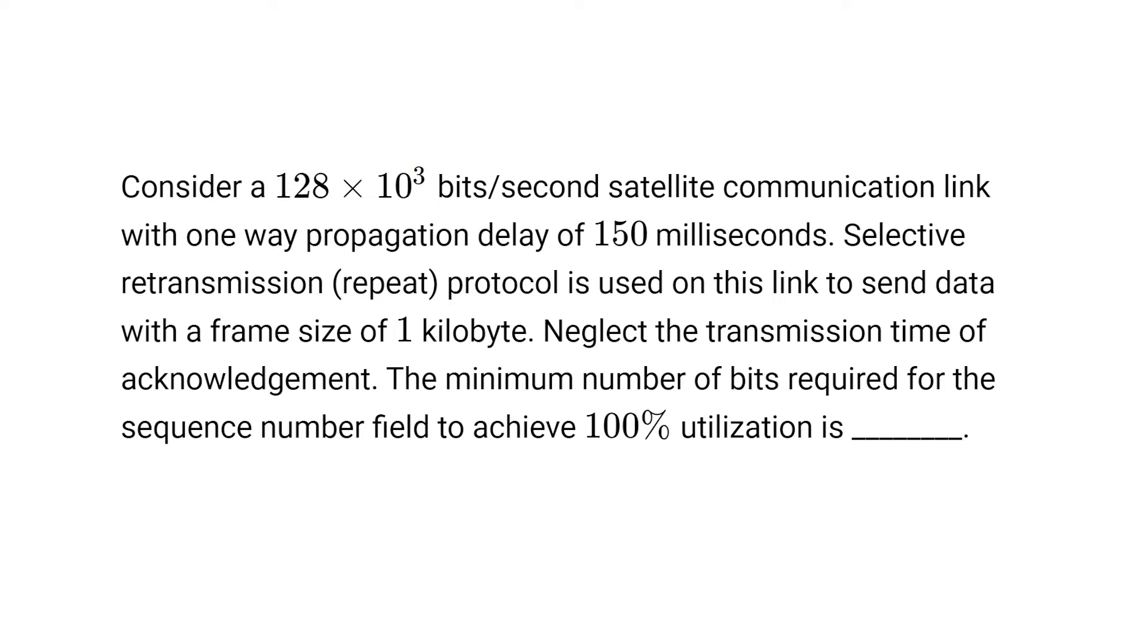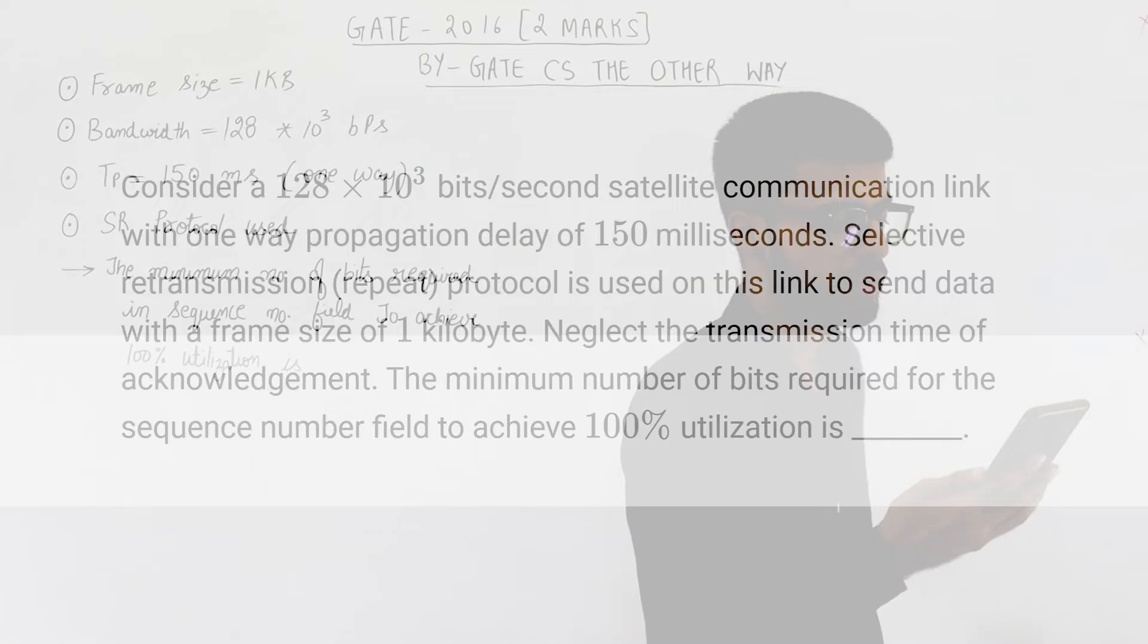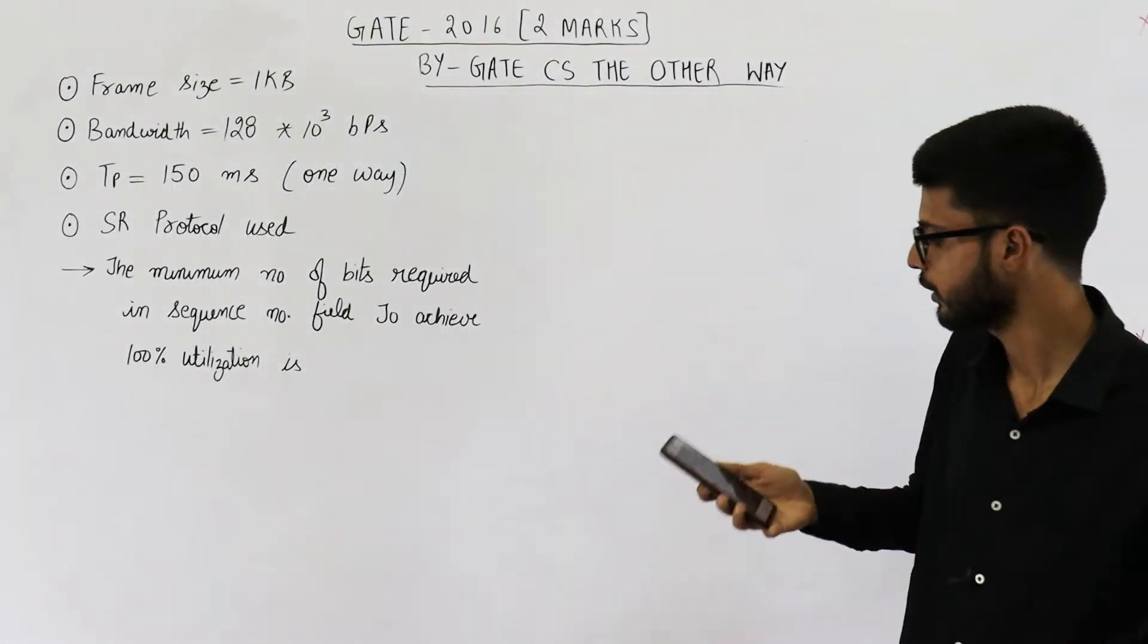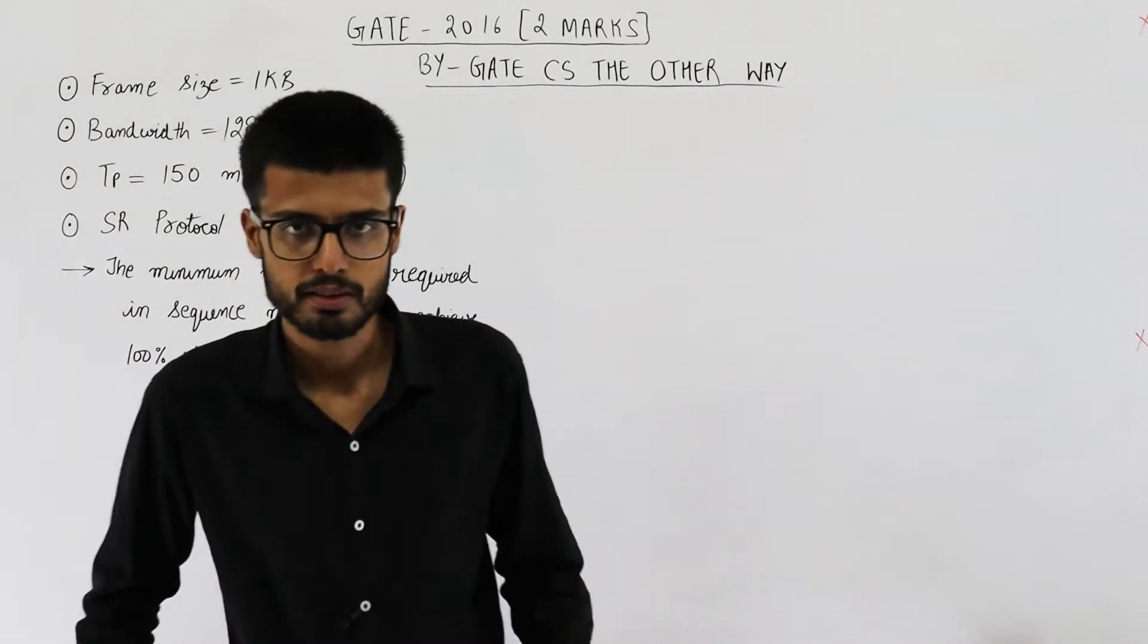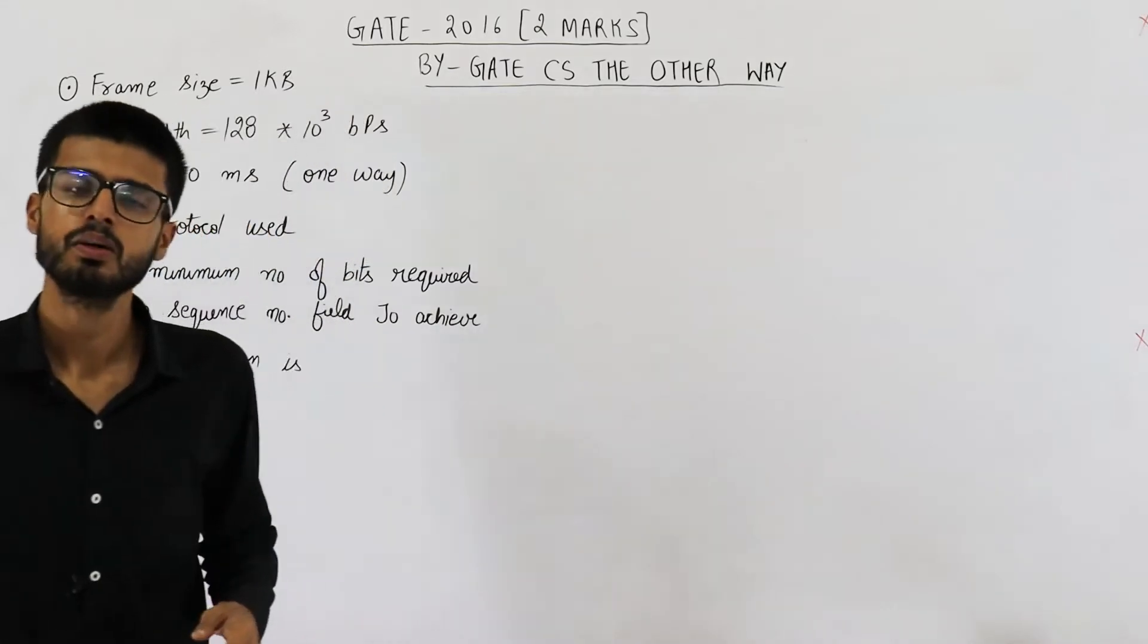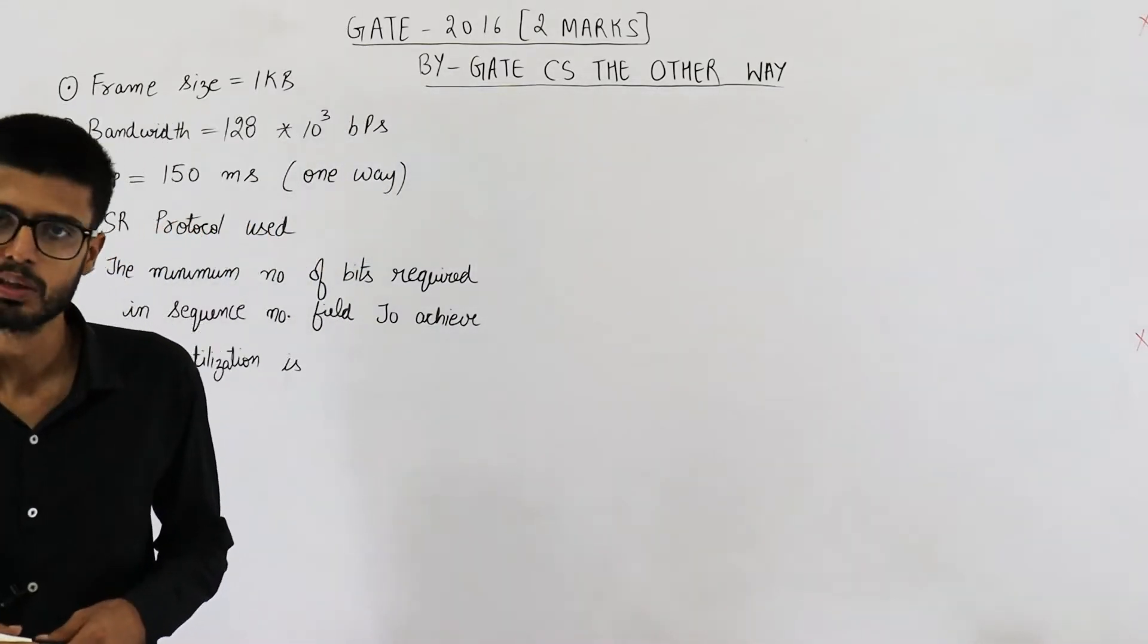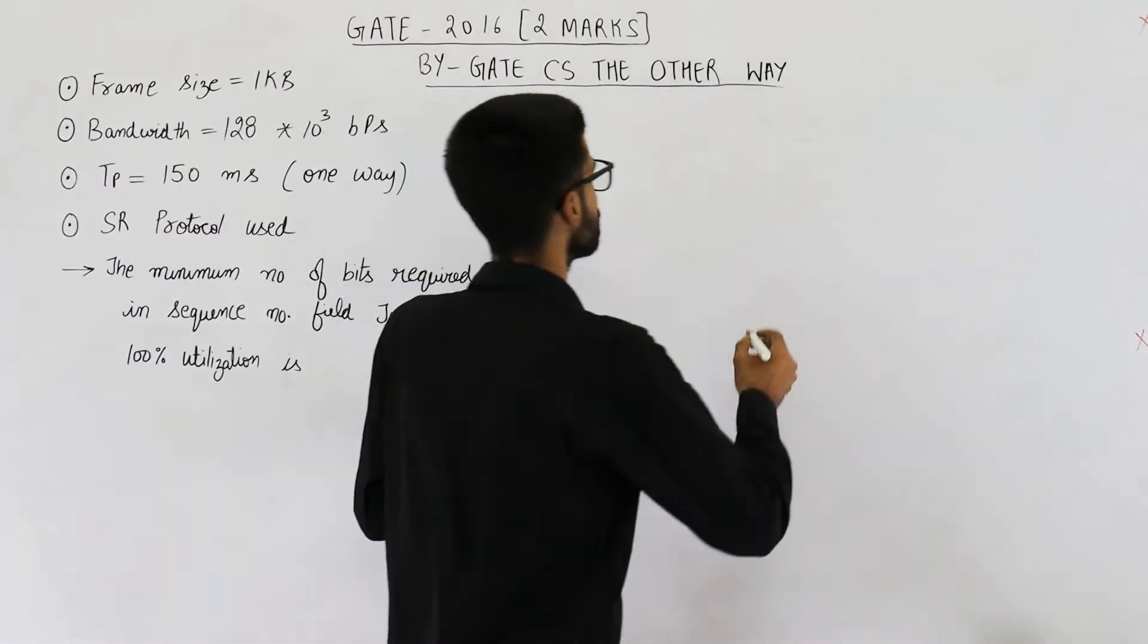The minimum number of bits required for the sequence number field to achieve 100% utilization is what we need to find. So we need to find out the minimum number of bits in sequence number field. For that, first we need to know how many minimum number of sequence numbers are required.